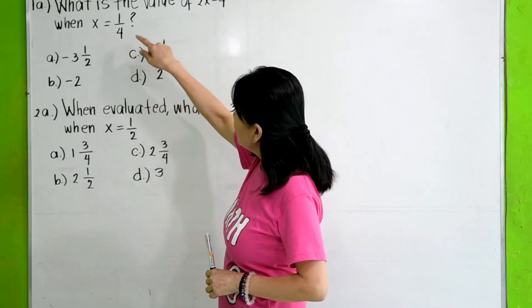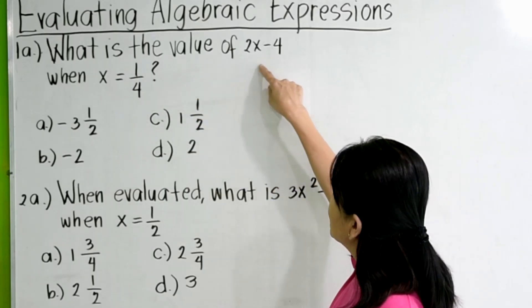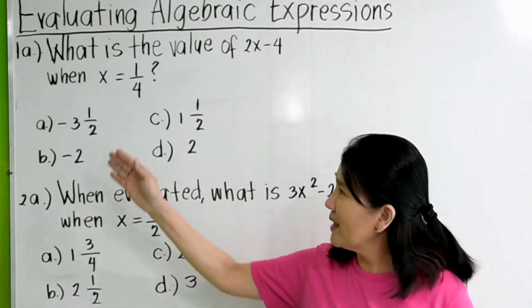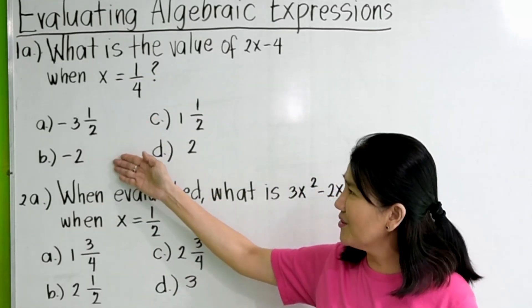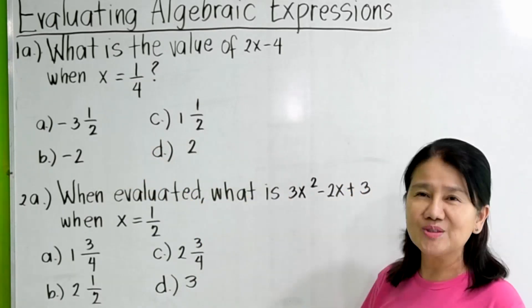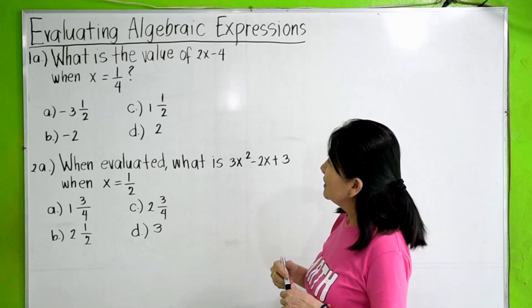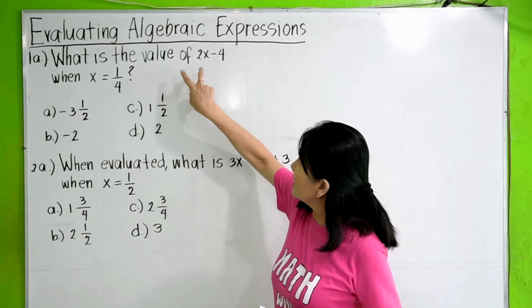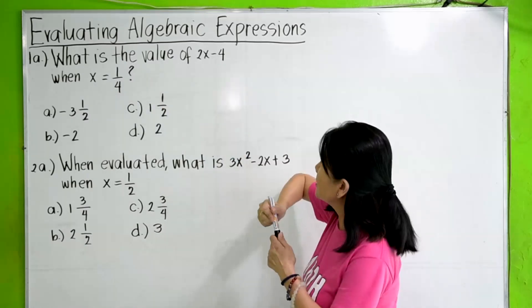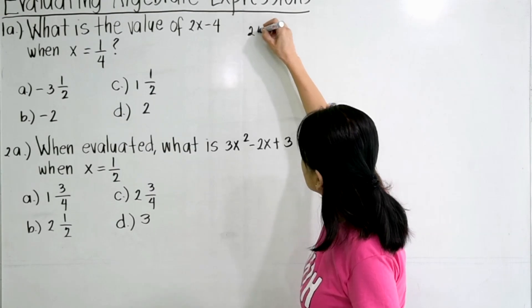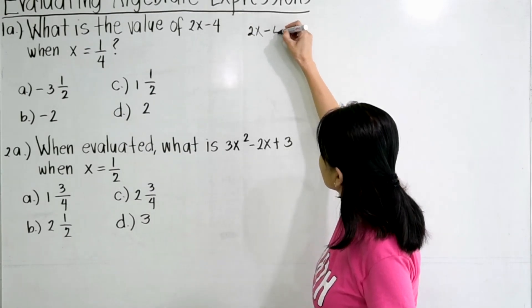Number one, what is the value of 2x minus 4 when x is equal to 1/4? So we have a) negative 3 1/2, b) negative 2, c) 1 1/2, and d) 2. Now, all we have to do is to substitute the value of x in the given algebraic expression. So in this case, we have here 2x minus 4.